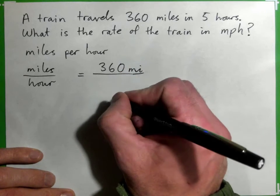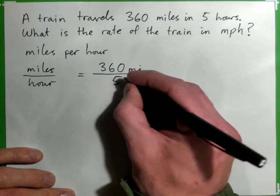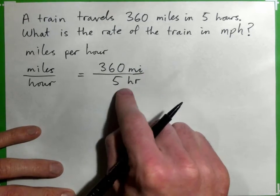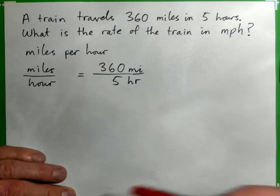How many hours do we do? 5 hours. HR is shorthand for hour. So 360 MI over 5 HR. And then we have our fraction, and then we need to divide.